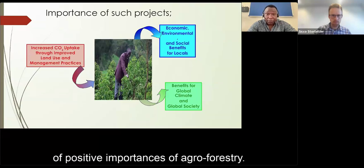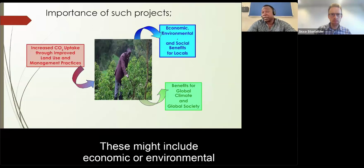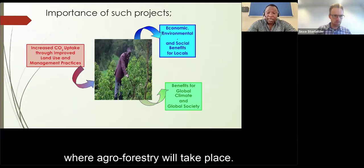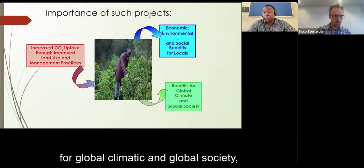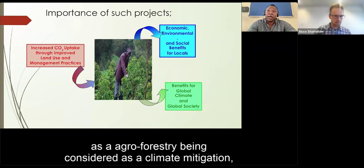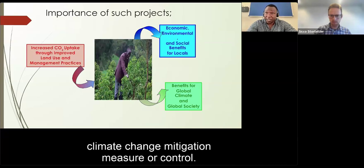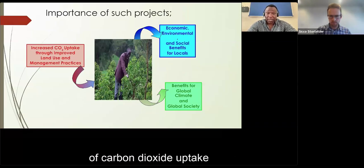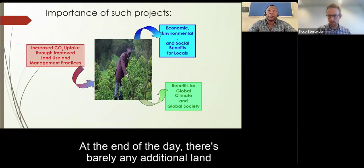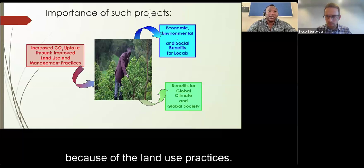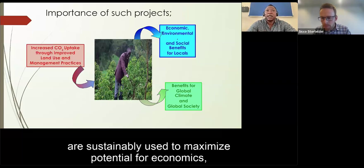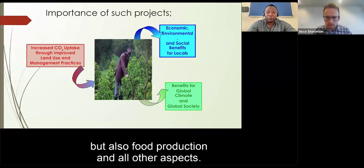There are many important positive aspects of agroforestry, including economic, environmental, and social benefits for local land owners. There are also benefits for global climate and global society — primarily through agroforestry being recognized as a climate change mitigation measure. This is a global phenomenon. Agroforestry increases carbon dioxide uptake through improved land use planning and management practices, and ensures that remaining land is sustainably used to maximize economic, food production, and other potential.